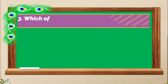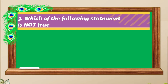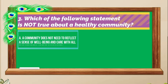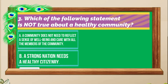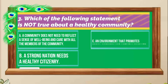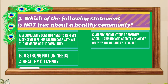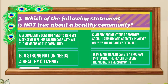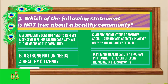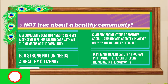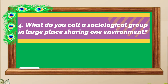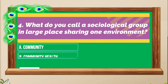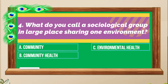Question number 3: Which of the following statements is NOT true about a healthy community? A. A community does not need to reflect a sense of well-being and care with all the members of the community. B. A strong nation needs a healthy citizenry. C. An environment that promotes social harmony and actively involves only the barangay officials. D. Primary health care is a program protecting the health of every individual in the community. Number 4: What do you call a sociological group in a large place sharing one environment? A. Community, B. Community health, C. Environmental health, D. Health.